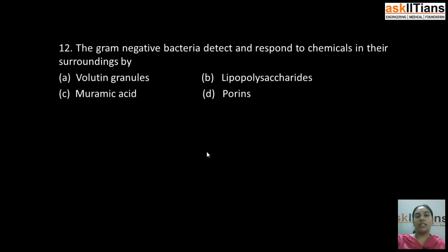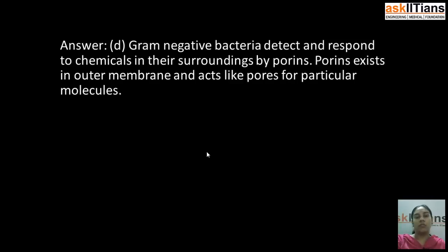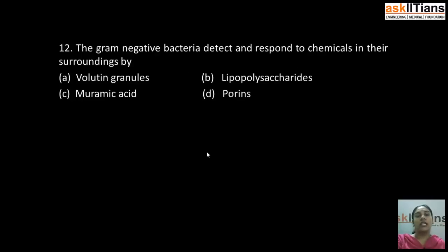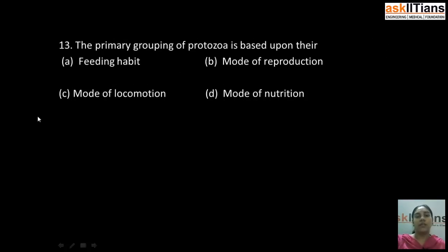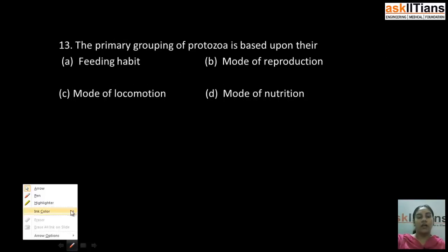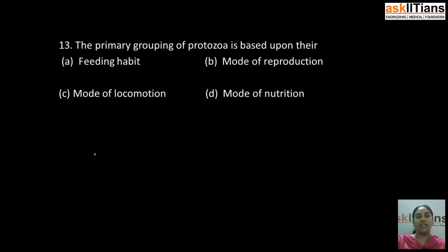Our next question is: gram-negative bacteria detect and respond to chemicals in their surroundings by — A) volutin granules, B) lipopolysaccharides, C) muramic acid, D) porins. The correct answer is D: porins. Porins are present in the cell wall of gram-negative bacteria; they act as pores for certain molecules, so they help in detection and responding to chemicals in their surroundings.